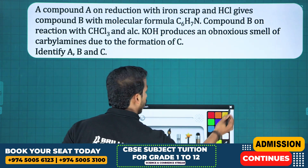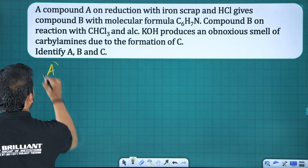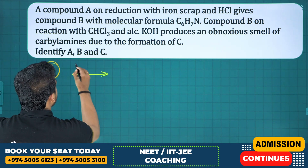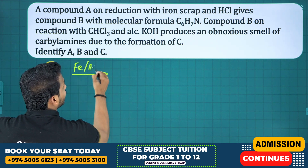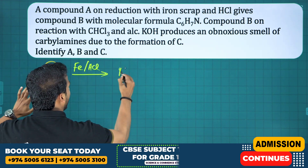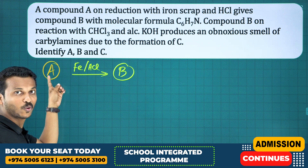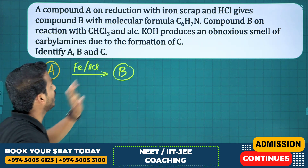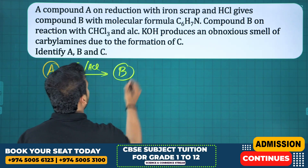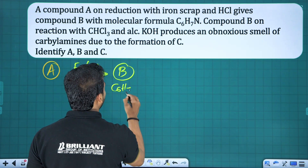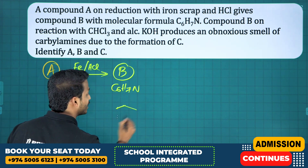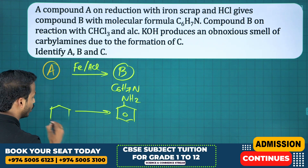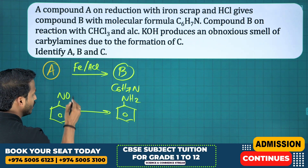An organic compound A on reduction with iron scrap and HCl gives compound B. A is a nitro compound because nitro on reduction with iron and HCl gives an amine. Compound B has the formula C6H7N, which is aniline. So A is nitrobenzene and B is aniline.